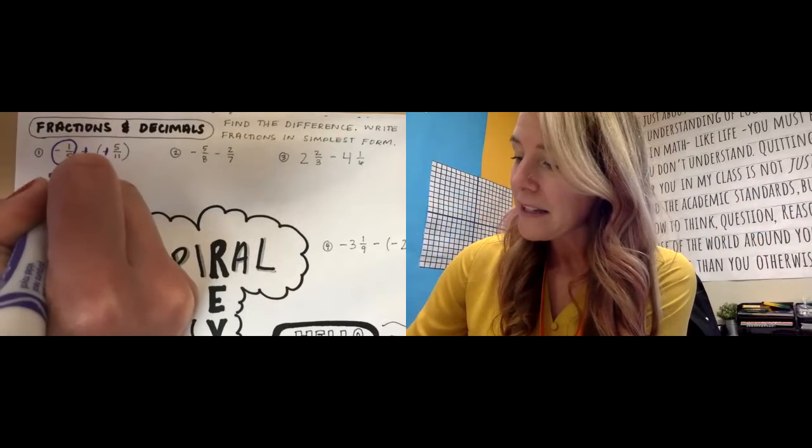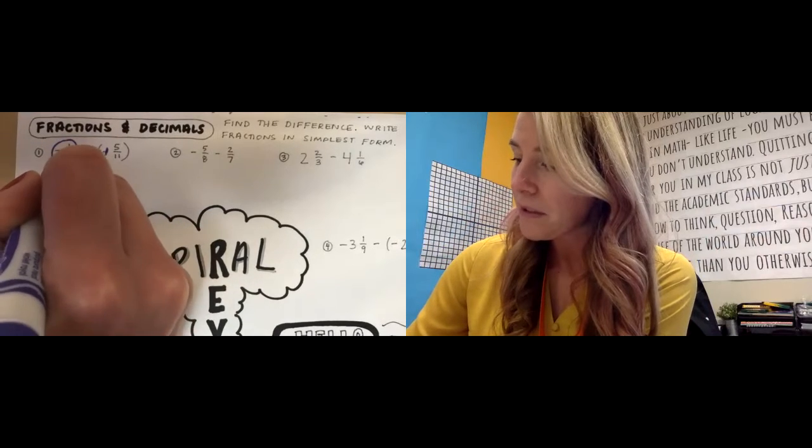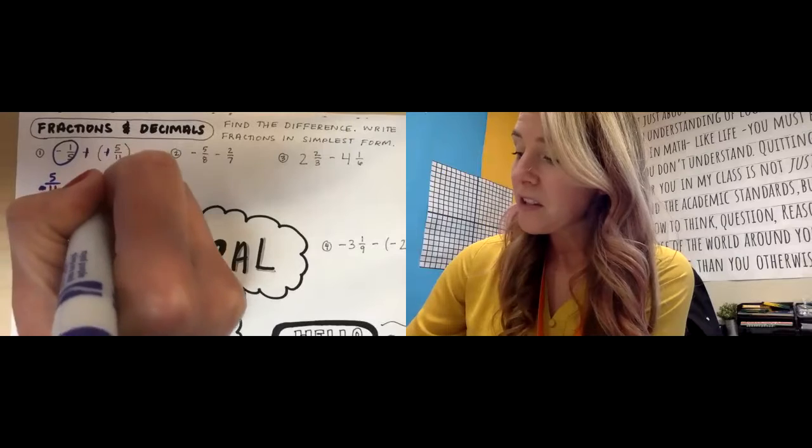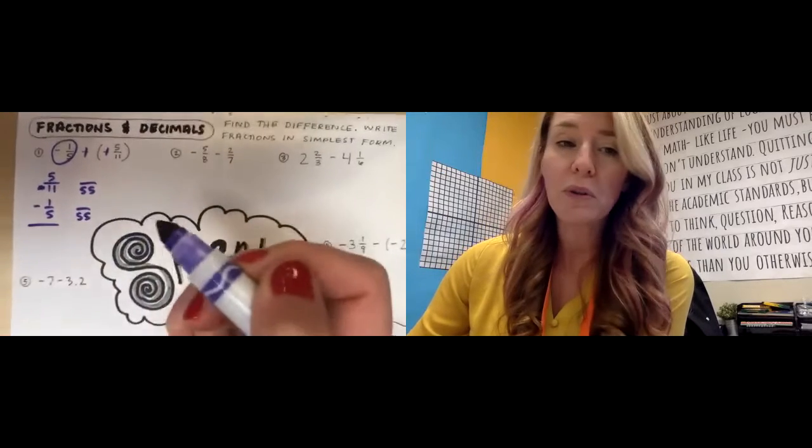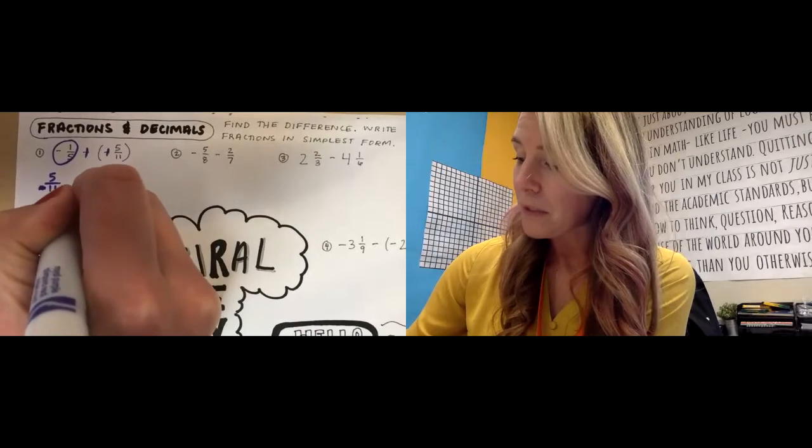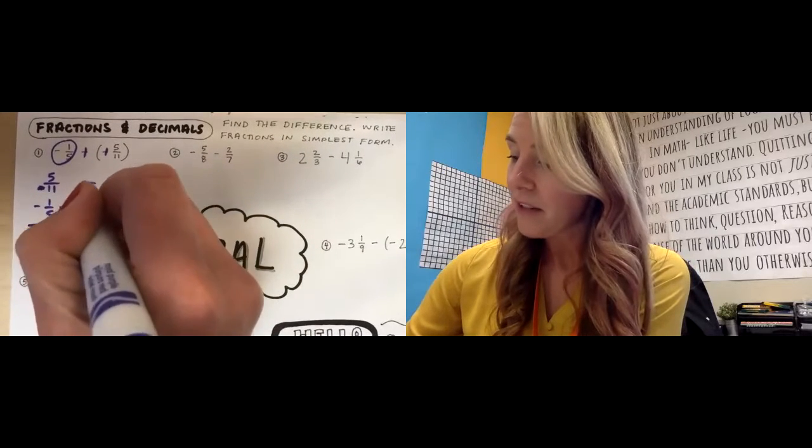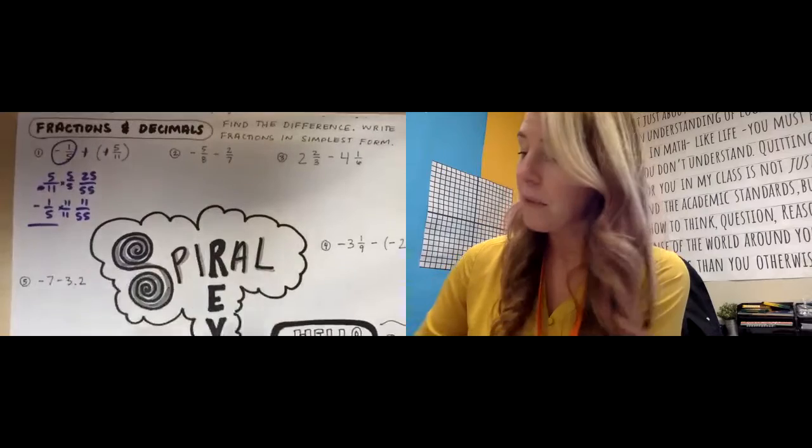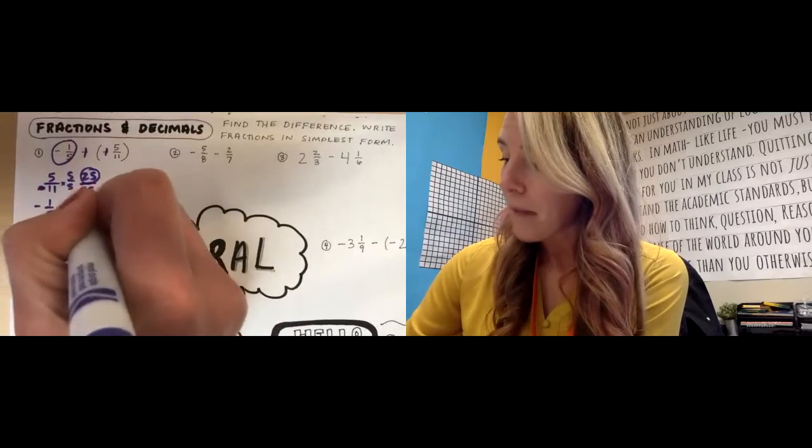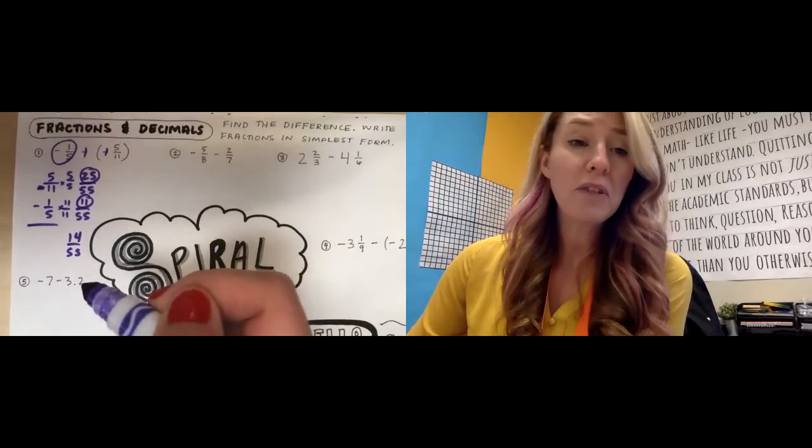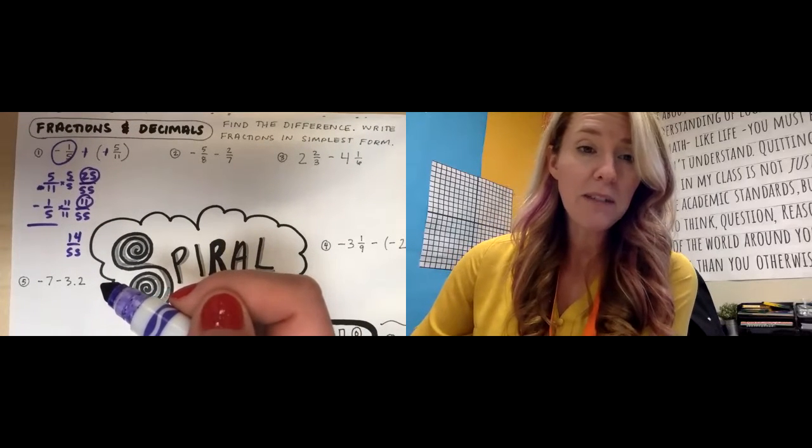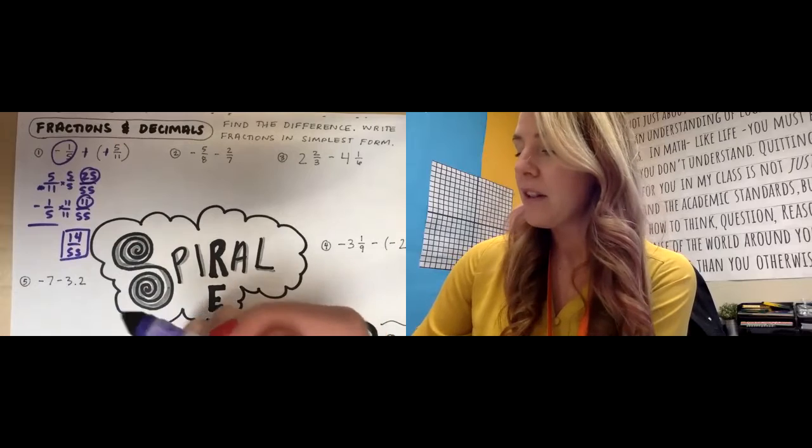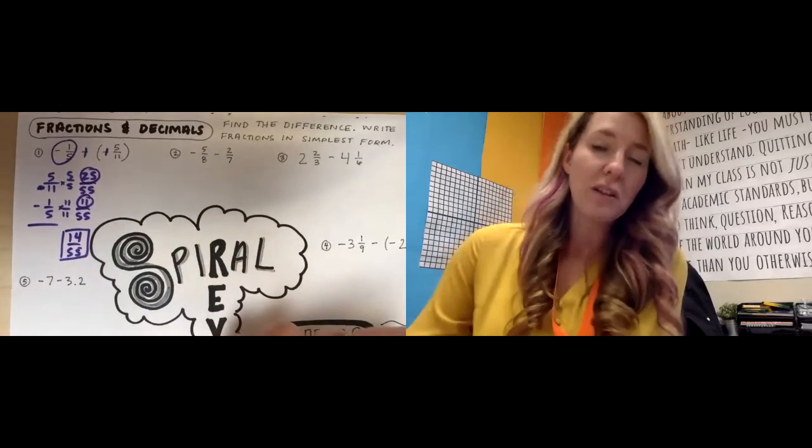So five elevenths minus one fifth. I like to write my fraction problems for addition and subtraction one on top of the other so that I have space to create a denominator that they both go into. Five and eleven both go into 55. So I like to show my brain what's happening there. Five times 11 is 55, so one times 11 is 11. Eleven times five is 55, so five times five is 25. Now I know that my denominator is 55 and I have 25 minus 11. That's 14. And simplify if you can. If there's not a number that 14 and 55 can both be divided by, then we keep it as it is. Fourteen's only factors are one, fourteen, two, and seven, and none of those go into 55 except for the number one.